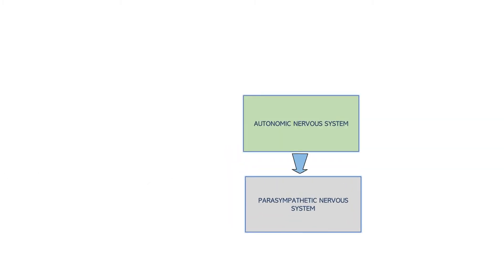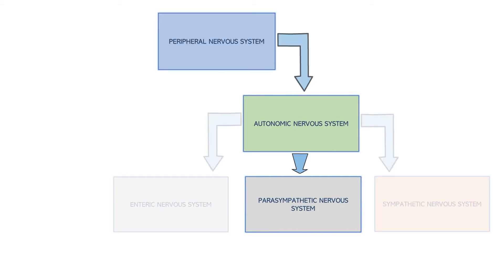The parasympathetic nervous system is a subdivision of the autonomic nervous system, which is the subdivision of the peripheral nervous system that controls automatic processes in the body, like digestion, heart rate, and respiration.